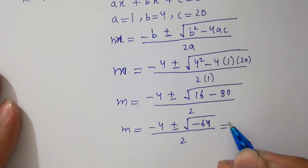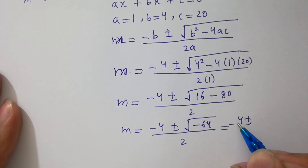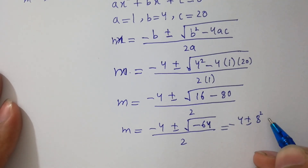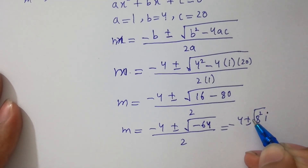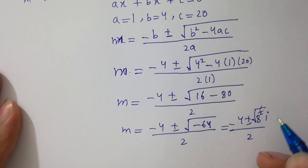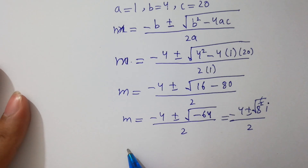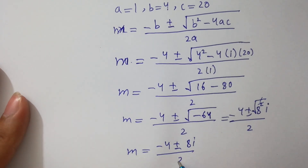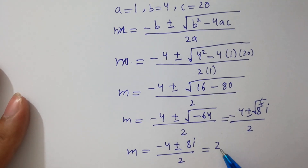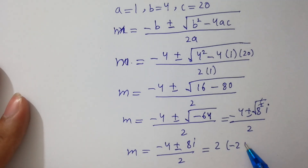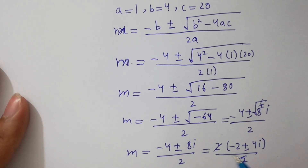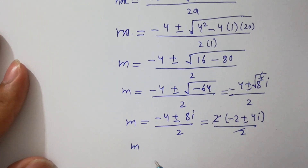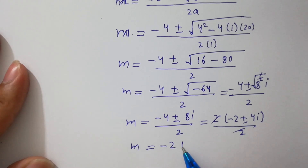We get minus 4 plus or minus the square root of (16 minus 80), which gives minus 4 plus or minus square root of minus 64. The square root of minus 1 is i, so this becomes minus 4 plus or minus 8i over 2. Factoring out 2, we get 2(minus 2 plus or minus 4i) over 2, and the 2 cancels. So M equals minus 2 plus or minus 4i.